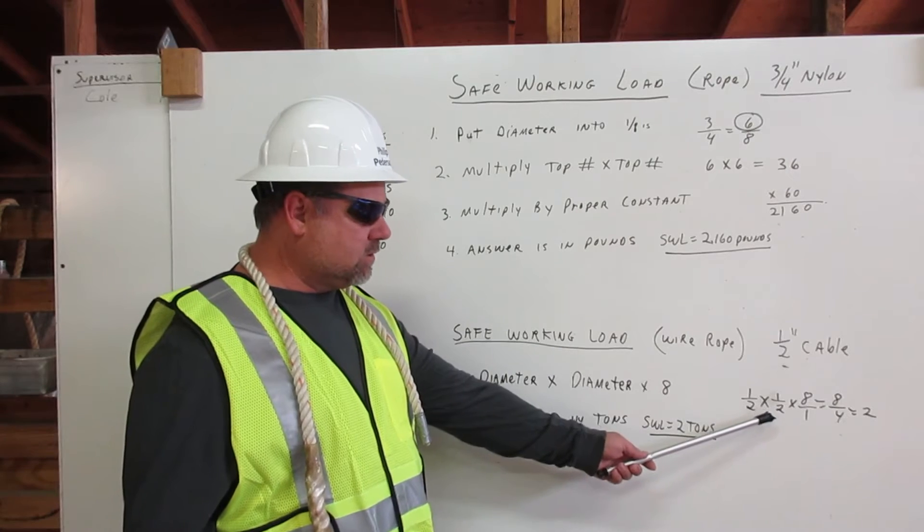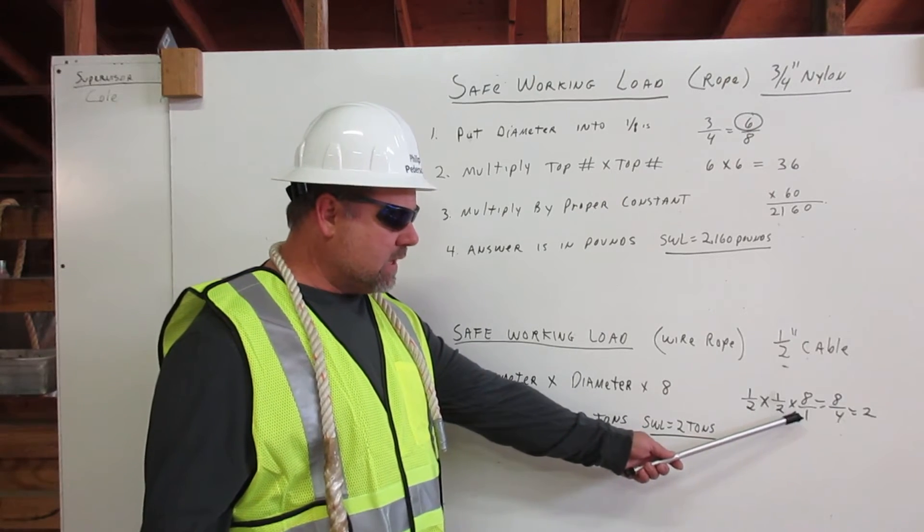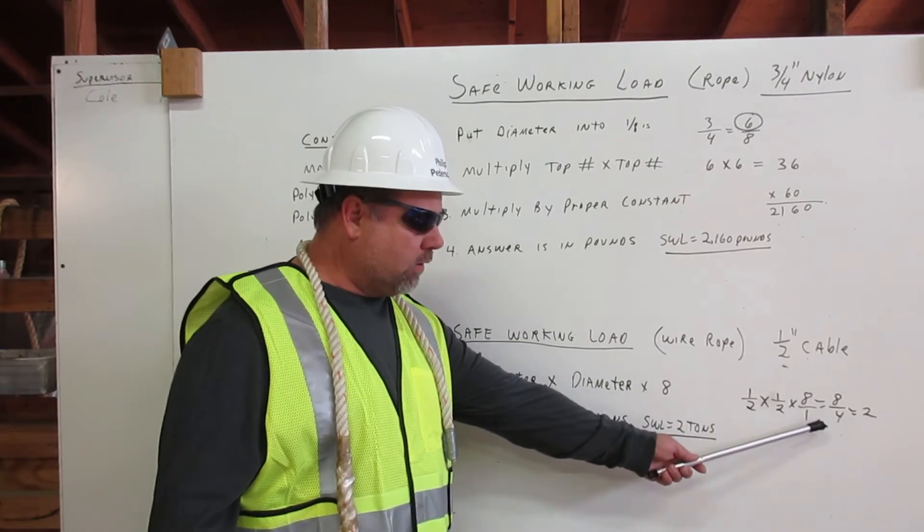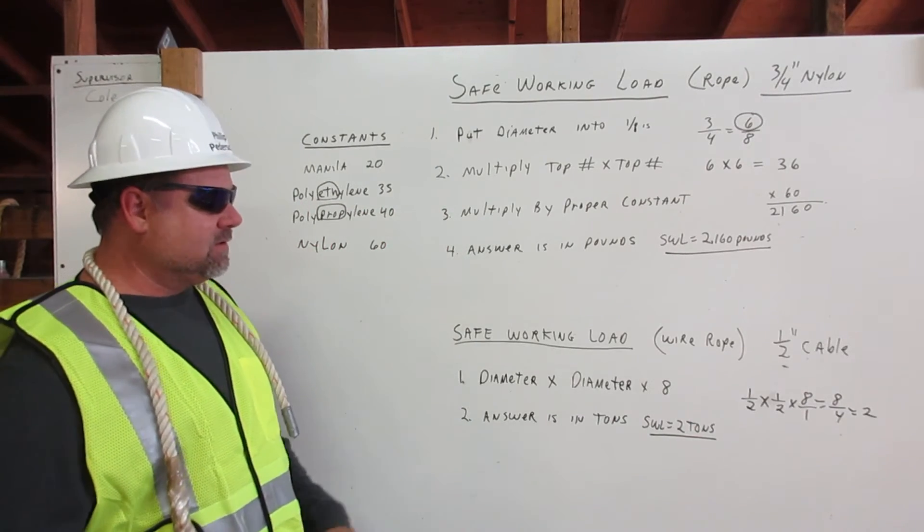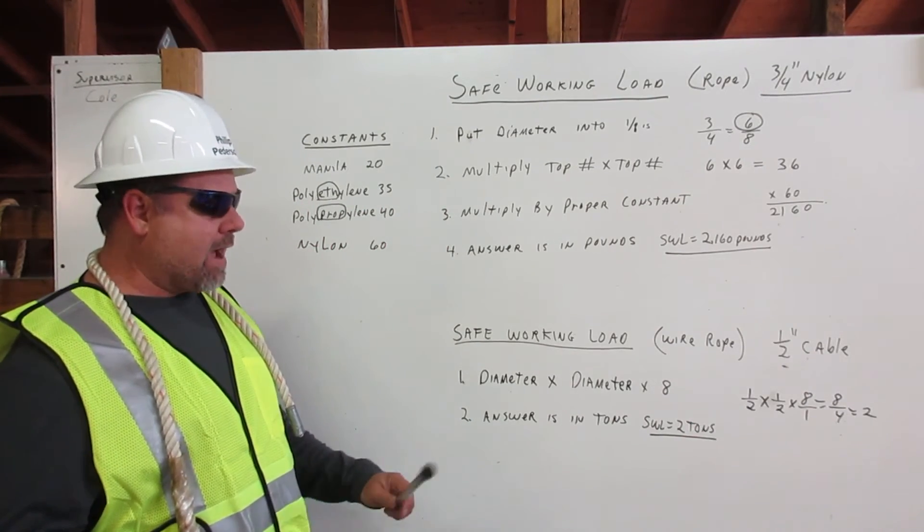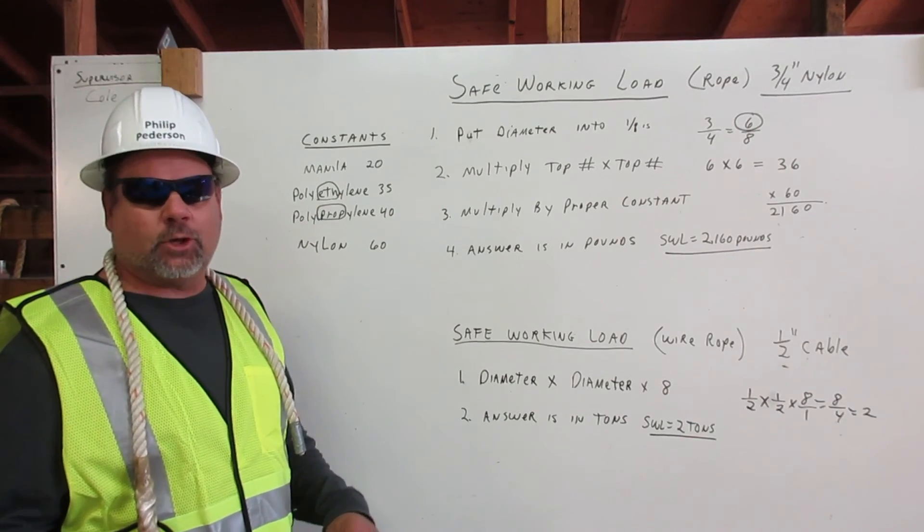Being this is half-inch cable, it's half-inch times half-inch times eight over one, which is eight, equals eight-fourths, or two. Therefore, our answer is in tons. Safe working load for a half-inch cable is two tons. Thank you.